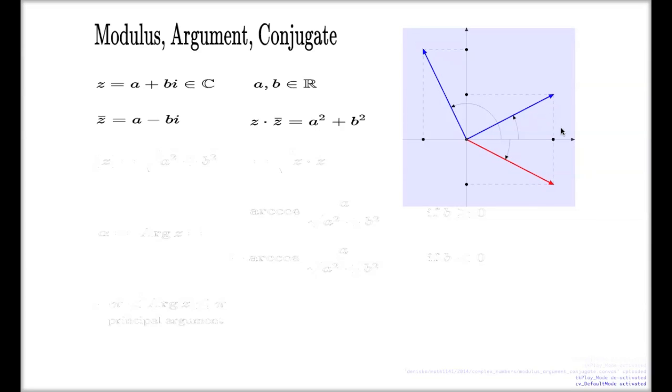For instance, here this blue vector—you may think of this vector as a representation for z, if this is a and this is b.